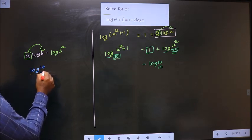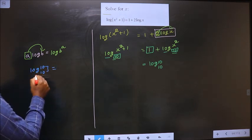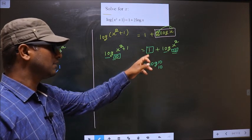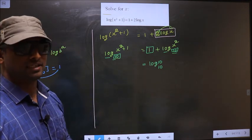Log₁₀(10) with base 10—whenever these two are same, this result is 1. So I replaced 1 with log₁₀(10).